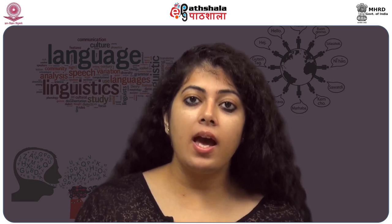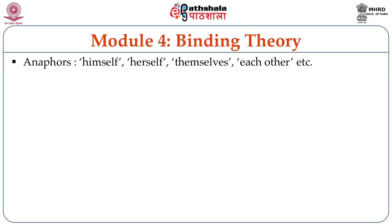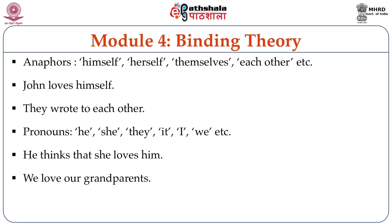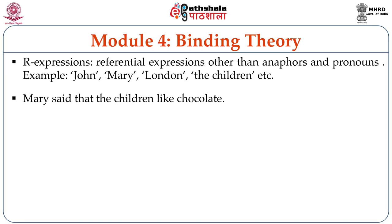Anaphors are terms like himself, myself, each other, etc. For example, in 'John loves himself,' himself is an anaphor. Pronouns are terms like he, she, they, it, etc. For example, in 'he thinks that she loves him,' he, she, and him are all pronouns. R-expressions are any referring expression which is not a pronoun or an anaphor — so proper nouns like John, Mary, London, or expressions like 'the boy in the class' are all R-expressions.